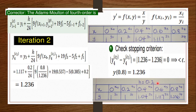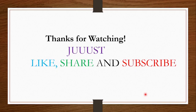The Adams-Bashforth-Moulton predictor-corrector method is a multi-step method. We used the Euler method to fill the initial portion of the table, then used Adams-Bashforth to predict a value, and Adams-Moulton to correct it through iterations until convergence. All the best in the exams — see you on the other side. Make sure you like, share, and subscribe, and leave your questions in the comments.